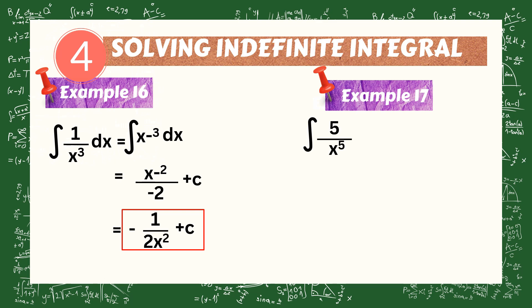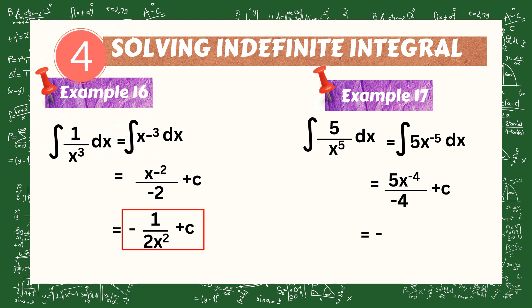Another example: evaluate the integral of 5 over x raised to the power of 5 dx. Rewrite as the integral of 5x raised to the power of negative 5 dx. Integrating: 5x raised to the power of negative 4 over negative 4 plus C. Simplifying: negative 5 over 4x raised to the power of 4 plus C. This is our final answer.